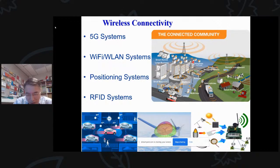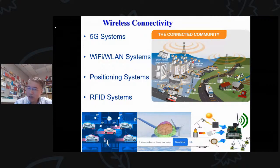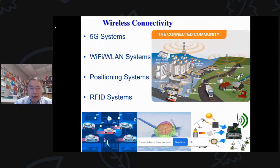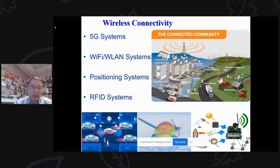There is a growing demand for wireless connectivity. The 5G cellular system, Wi-Fi, wireless LAN, positioning systems, RFID systems, and IoT — all of these require wireless connectivity. These systems may operate at different bands, and their size is getting smaller and smaller, so there is a huge demand for smaller, wideband, or multi-band antennas.